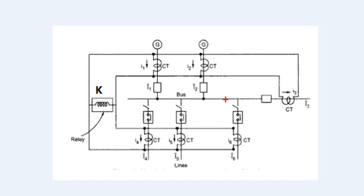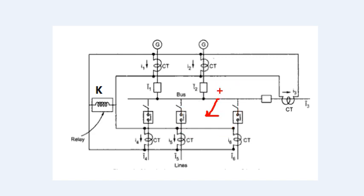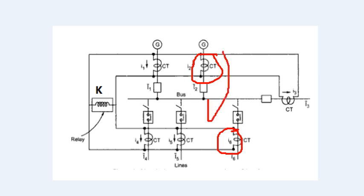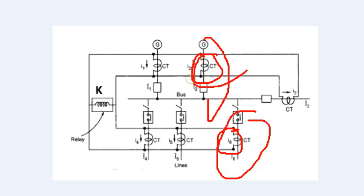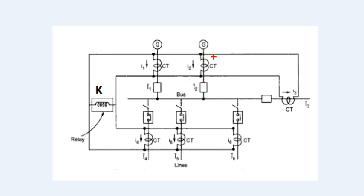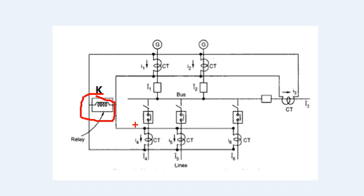If there is a fault inside the bus bar zone, the current becomes unbalanced. The CTs will read different values because extra fault current flows. This causes a differential current, and the relay will operate. This is the basic bus bar differential protection scheme.